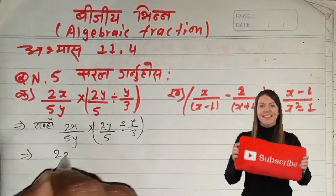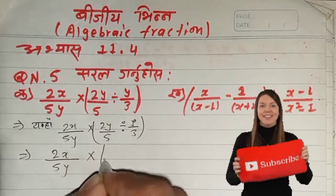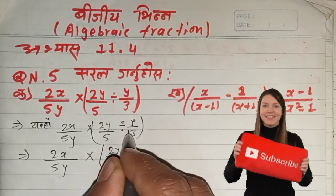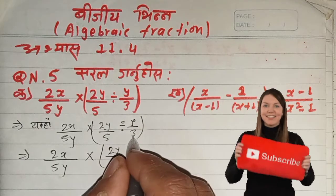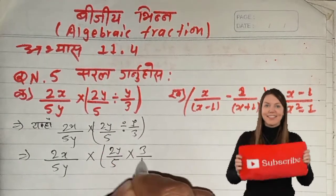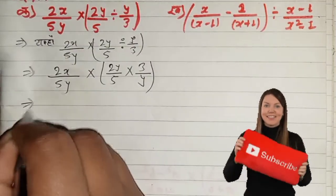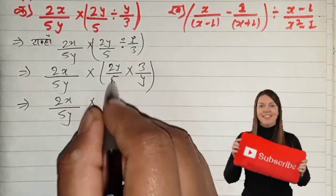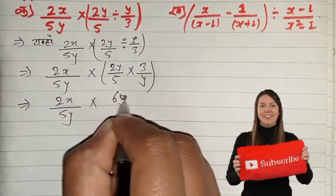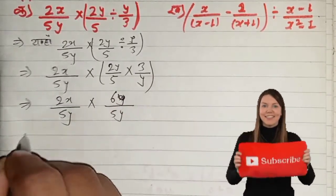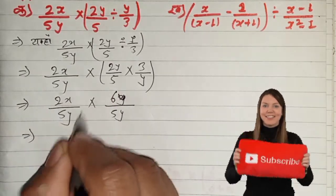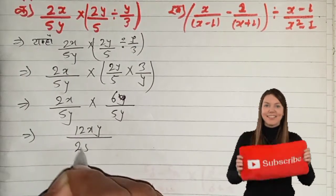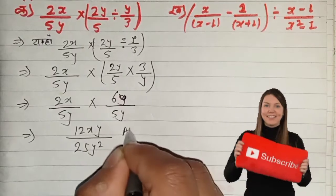Is equal to two yaksa upon five y, into two y upon five y, into two yaksa upon five y, into six y upon five y, by six y upon five y, by six y. Upon five y, y upon five y, by six y, by six y, by six y. Answer.